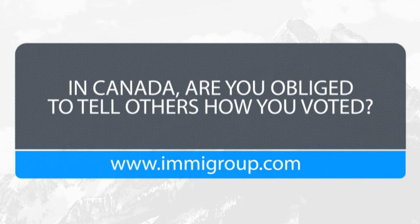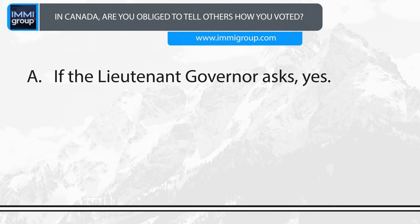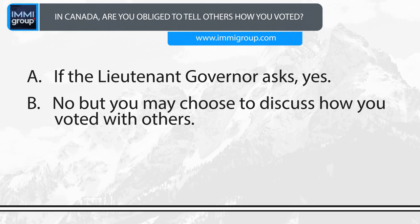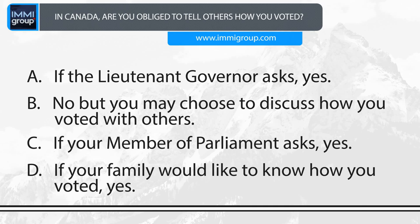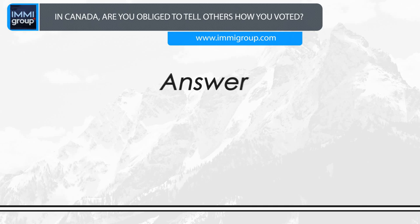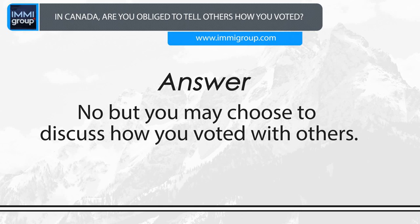In Canada, are you obliged to tell others how you voted? A. If the lieutenant governor asks, yes. B. No, but you may choose to discuss how you voted with others. C. If your member of parliament asks, yes. D. If your family would like to know how you voted, yes. Answer: No, but you may choose to discuss how you voted with others.